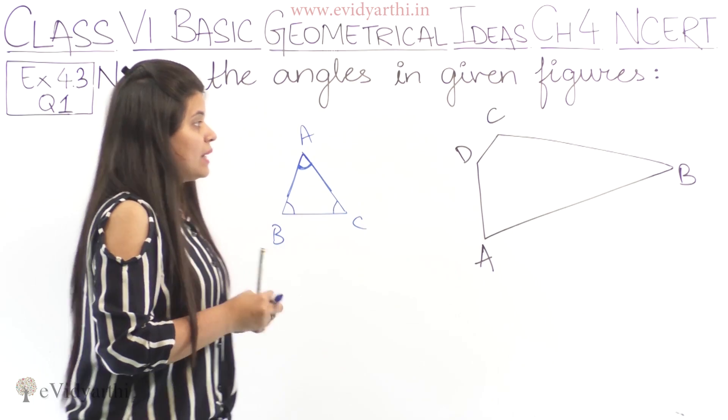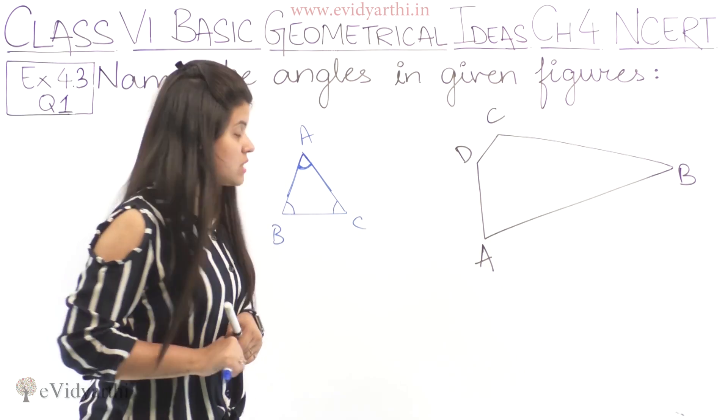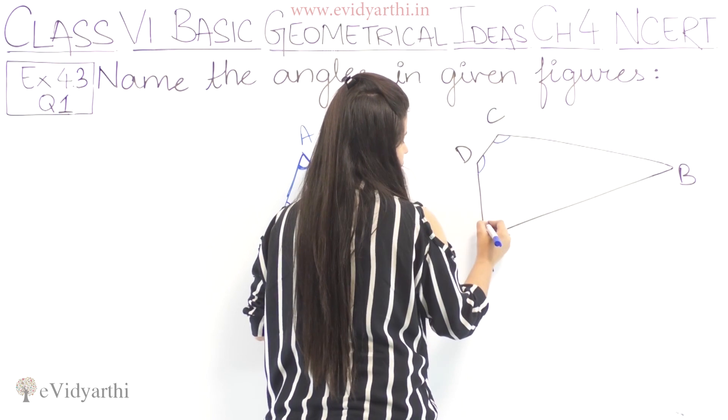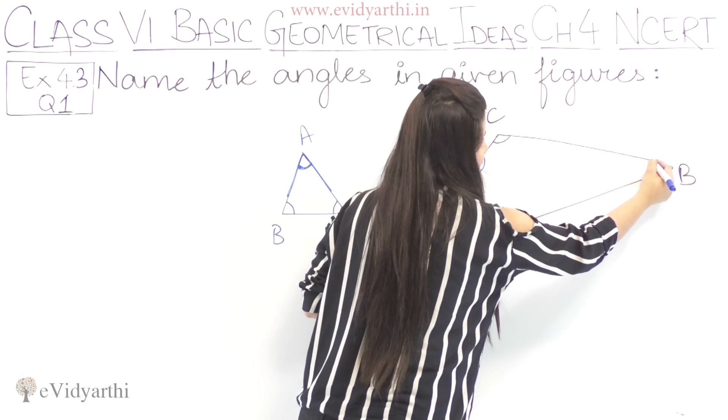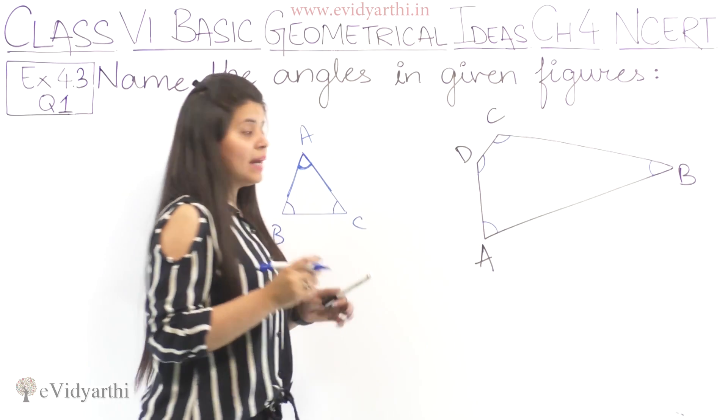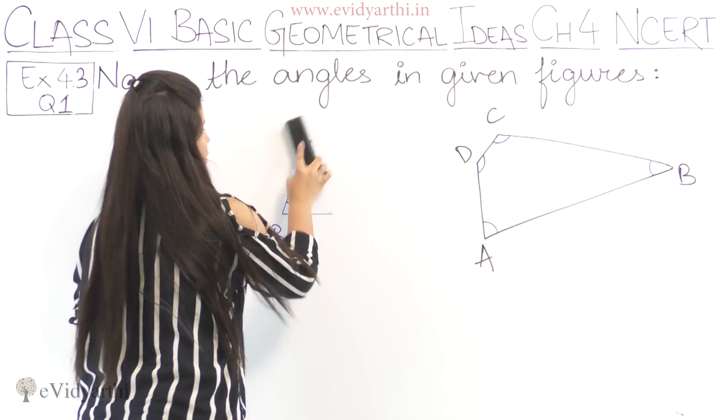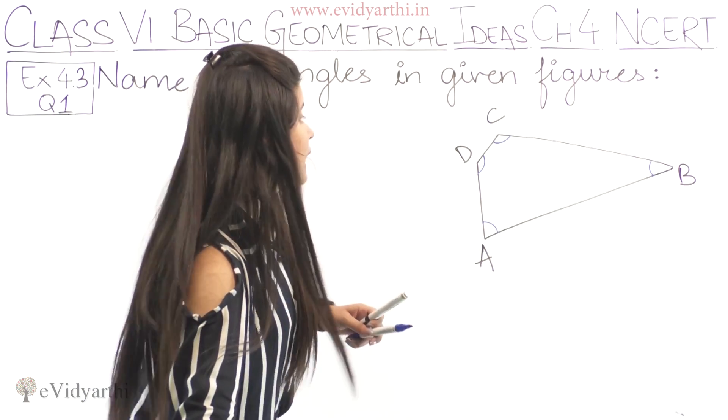Now, same thing in this figure. How many angles form here? 1, 2, 3, and 4. So here we have 4 angles. So we have to name them.